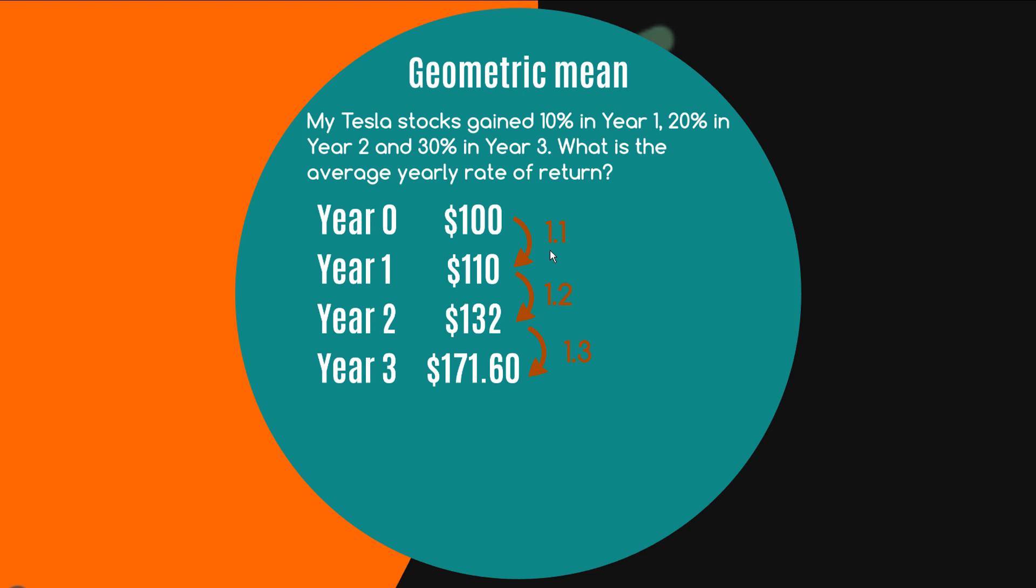So you can see here that we have a changing yearly rate of return over the three years but what the question is kind of asking is can we find a yearly rate of return which is the same for each of these three years and still gets us to $171.60. Now the reason why this is a geometrical problem is that if you think about a rectangular prism where the dimensions are 1.1, 1.2 and 1.3 respectively we can ask what is the side length of a cube that has the same volume and that's exactly the same question so even though this is a financial question here there's this geometrical analogy which is why this is a geometric mean.